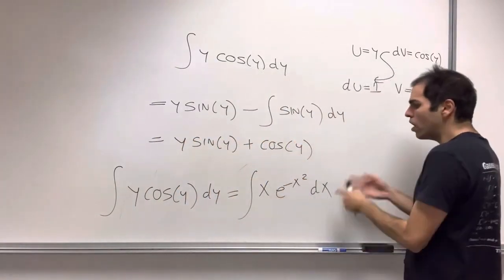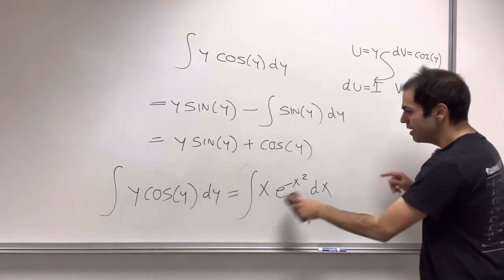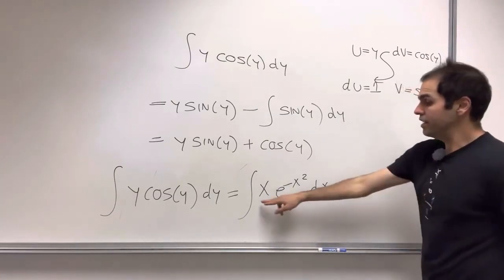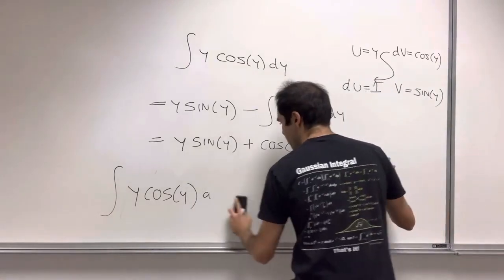And no constant, because we'll put a constant here anyway. No need to have 2 here. And so now let's integrate x e to the minus x squared. But that just calls for a simple substitution,